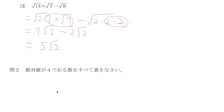絶対値が4である数をすべて書きなさい. 絶対値 is the word for absolute values. What are the numbers with the absolute value of 4? Positive 4 and negative 4.